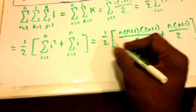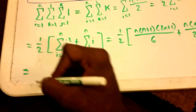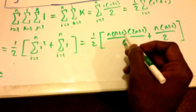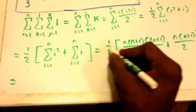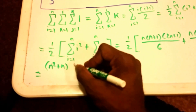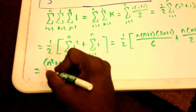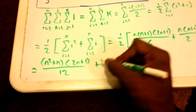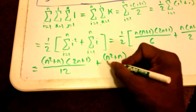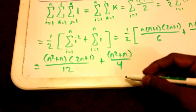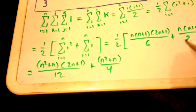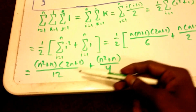Now let's simplify this a little bit more. What I'm going to do is multiply out — the n and the 1/2 — so we get (n² + n)(2n + 1) all over 12, plus (n² + n) all over 4. What I did was multiply that 1/2 with the 1/6 to get 12, and with the other 1/2 to get 4.